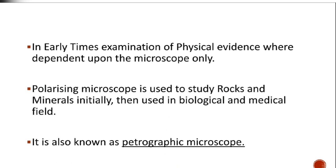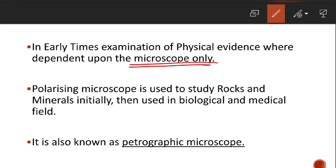In early times, examination of physical evidence was dependent upon the microscope only. Initially forensic science did not have many advanced techniques, so physical evidence examination was done just with the microscope. Now we have many advanced techniques, but microscopic examination still plays an important and primary-level role.